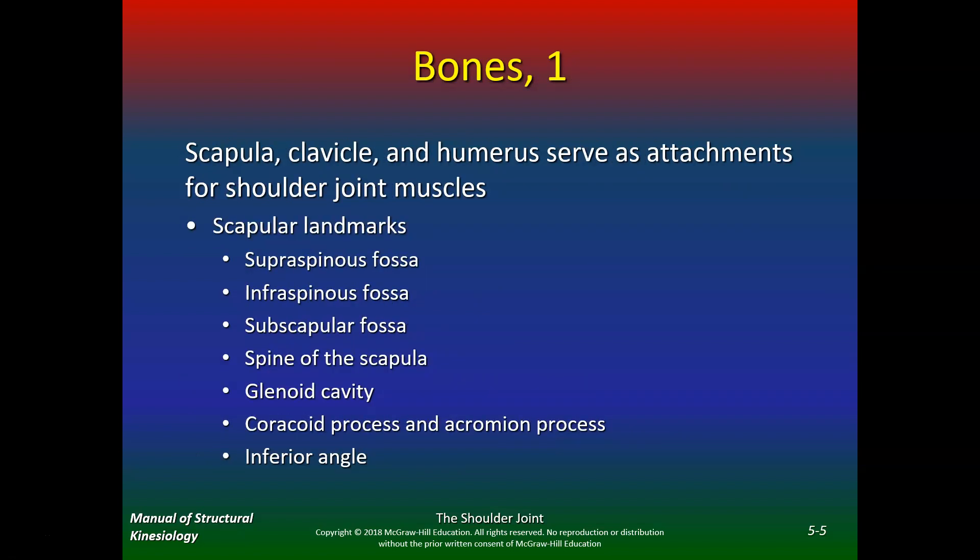You should know every single bone here and the bony landmarks. The scapula, clavicle, and humerus serve as attachments for shoulder joint muscles. The scapular landmarks are the supraspinatus fossa, infraspinatus fossa, subscapular fossa, spine of the scapula, glenoid cavity, coracoid process, acromion process, and the inferior angle.